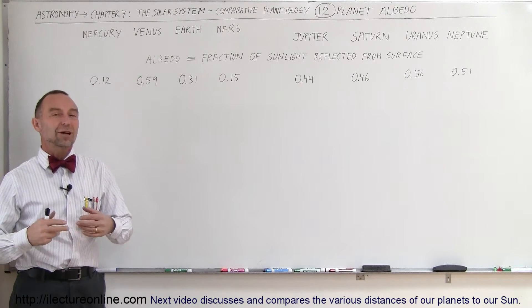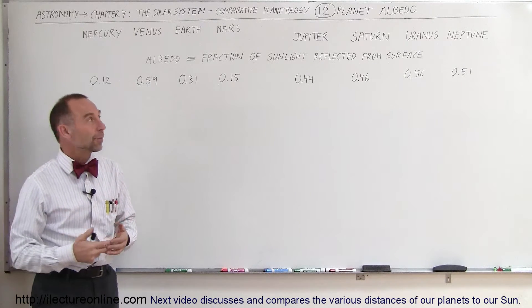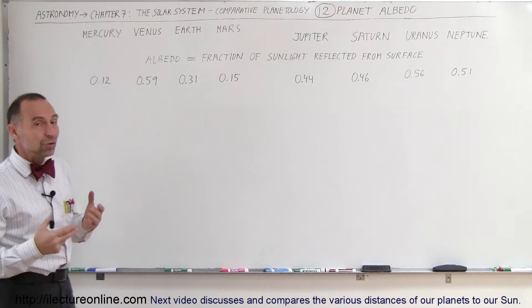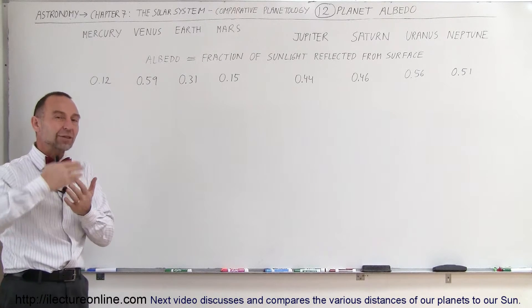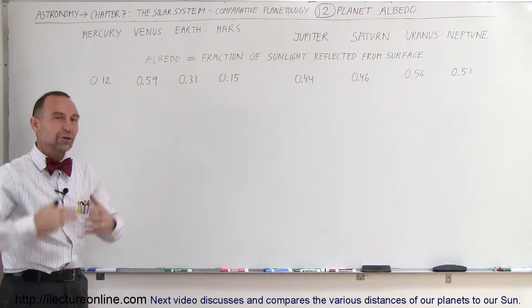Welcome to ElectronLine, and now let's talk about planet albedo. The albedo of the planets has to do with the amount of sunlight that's reflected back into space from the surface of the planet.